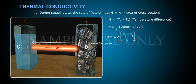Where Tc minus Td by L is called temperature gradient. The constant K is called the coefficient of thermal conductivity of material of bar. K is equal to H by A into Tc minus Td by L.